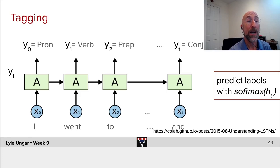So we have the word I, which would be then labeled pronoun. We have the word went, which is labeled verb. The word to, which is labeled preposition. The word and, which is labeled conjunction.